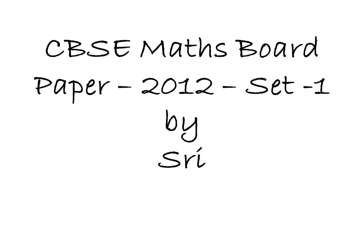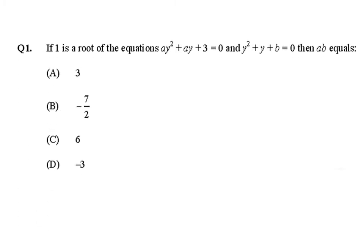CBSE Max Board Paper 2012, Set 1. The first multiple choice question: if 1 is the root of the equations ay² + ay + 3 = 0 and y² + y + b = 0, then we have to find the value of ab. The options are: (a) 3, (b) -7/2, (c) 6, and (d) -3.